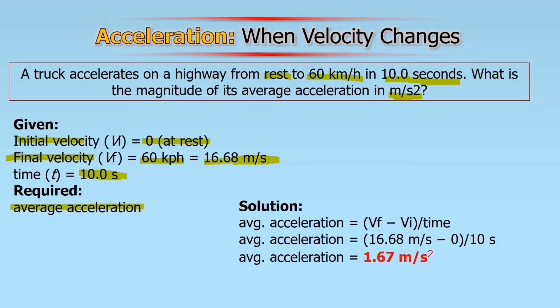We are going to copy the formula: velocity final minus velocity initial over time. Then substitute it with the given. Our final velocity is 16.68 meter per second minus initial 0 divided by 10. Our answer is 1.67 meter per second squared. Very easy, right?